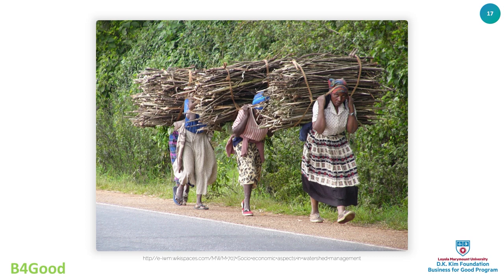Here are some images that represent many parts of the world. This image is from Mozambique and it shows interconnectedness between the economic, the environmental, and the social. Women are looking for firewood — it's a resource used for cooking and for keeping families warm.